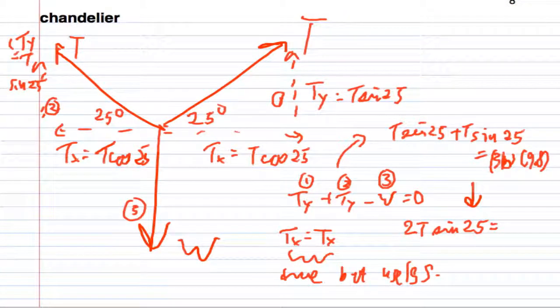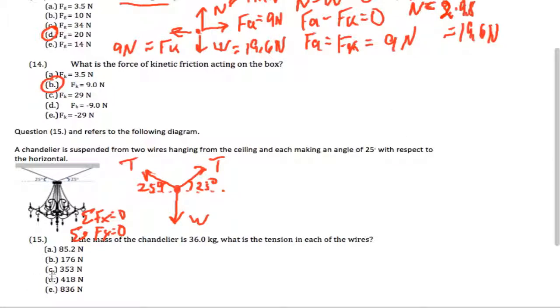And that's going to give me 352.8 Newtons. And now I need to isolate the letter T. When I isolate it, the answer that I actually get for the force is going to be 417 Newtons, which is choice D.